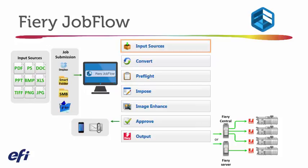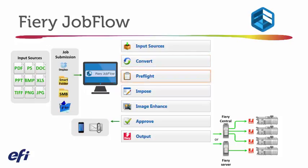Once the job is in, it goes through a convert process where it will be converted to PDF. From there, pre-flight is performed. Another distinction with Jobflow is that it includes Enfocus PitStop Professional 12. So not only can you identify the specific pre-flight you'd like performed, you can also add in some corrections and post-flight — giving you more sophisticated control over finding errors and correcting those errors.